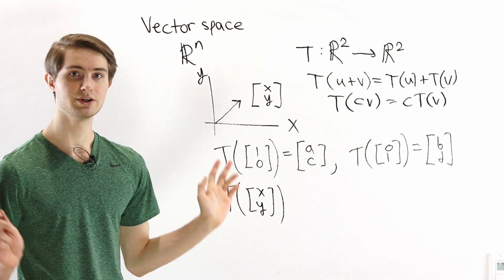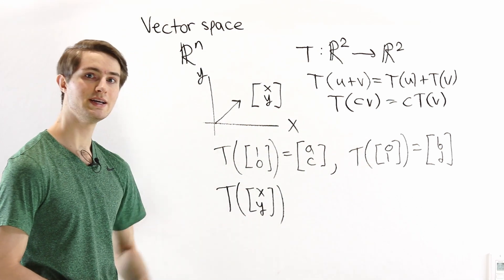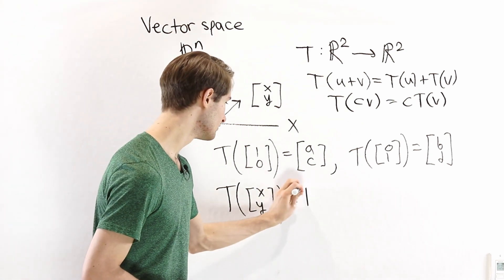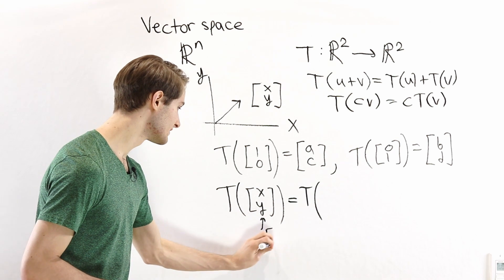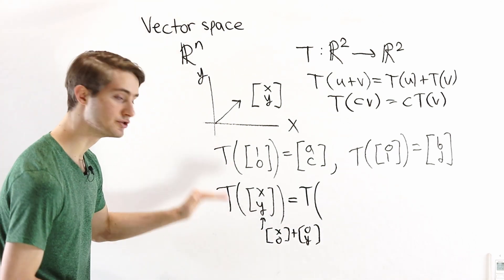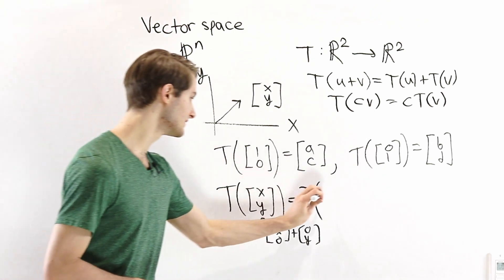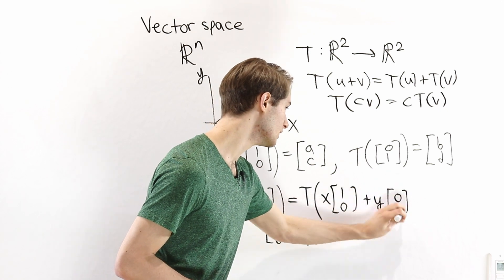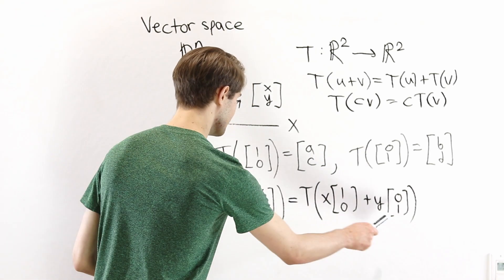The answer is yes. So let's see why that's true. First of all, I can write x, y in a very specific way. I know that I can write this as x, 0 plus 0, y. I can split up the vector into its 2 components. But I can also split these up even further, because I can write x, 0 as x times 1, 0, and I can write 0, y as y times 0, 1. So now I've really split up our transformation, and you can see that now we have 1, 0 and 0, 1.